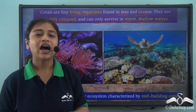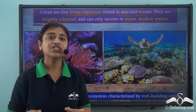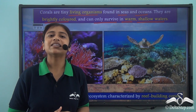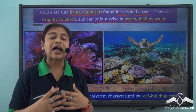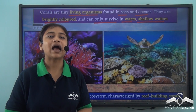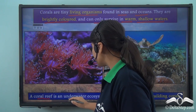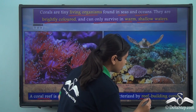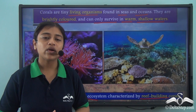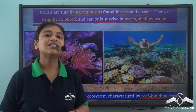These brightly coloured corals are tiny living organisms found in oceans and seas, mostly in shallow waters. The Great Barrier Reef, the largest living structure on earth, is a collection of millions of such corals converted into reefs. These tiny organisms leave out calcium carbonate, and after they die, their skeletal remains harden to form coral reefs. A coral reef is an underwater ecosystem characterised by reef-building corals, and the Great Barrier Reef was formed through this same process.